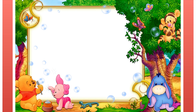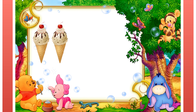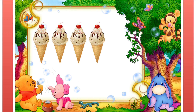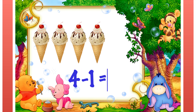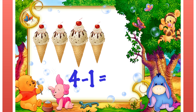Do you like ice cream? Say you have one, two, three, four ice creams and you are going to eat one. Here the subtraction you are going to do is four minus one, which means you have four ice creams and you take away one.